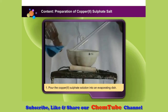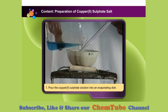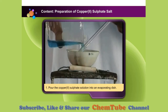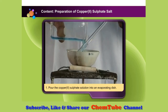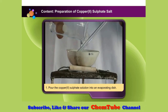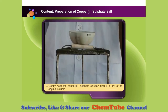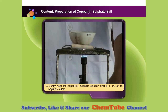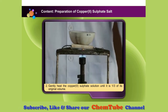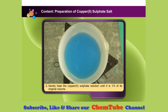The filtered copper(II) sulfate solution is poured into an evaporating dish. It is then heated gently over a Bunsen burner until the solution is one-third of its original volume and becomes saturated.